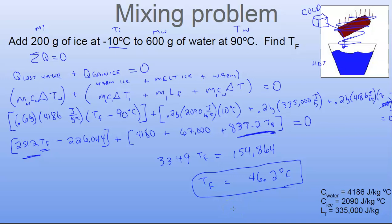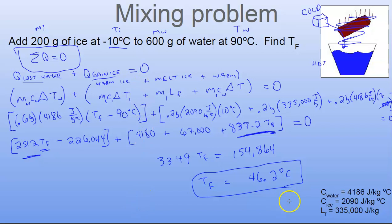If you can keep it all straight, watch your units, and do that little bit of algebra — distribute, put numbers in to simplify — that's the process. Once again, start with the sum of the heat equals zero: one is losing energy and the other is gaining, but there's no magic energy going in or out.